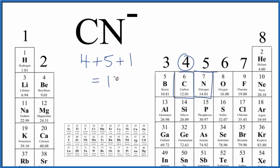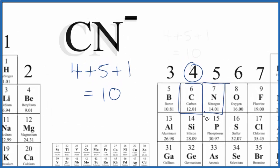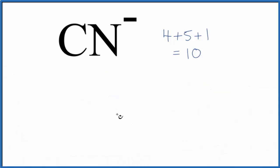Ten total valence electrons for the CN minus Lewis structure. So we're going to write carbon and nitrogen, and we have a total of ten valence electrons. We'll put two between the atoms. That forms the bond.